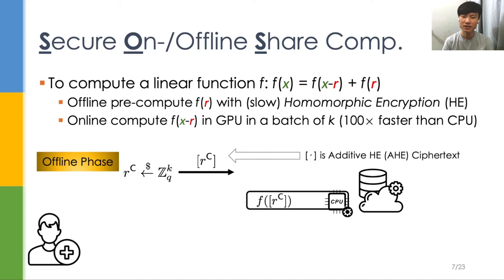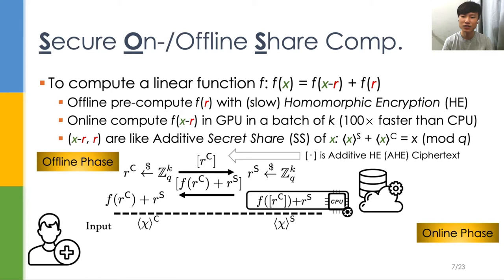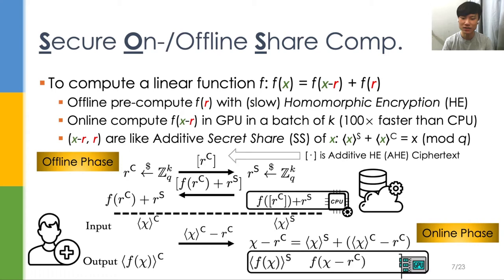The server applies the linear function f on the ciphertext, masks the results with a random value rs, and sends back the results. In the online phase, we assume the server and client have the additive secret shares of the input x, and hope to get the additive secret shares of the result f(x).